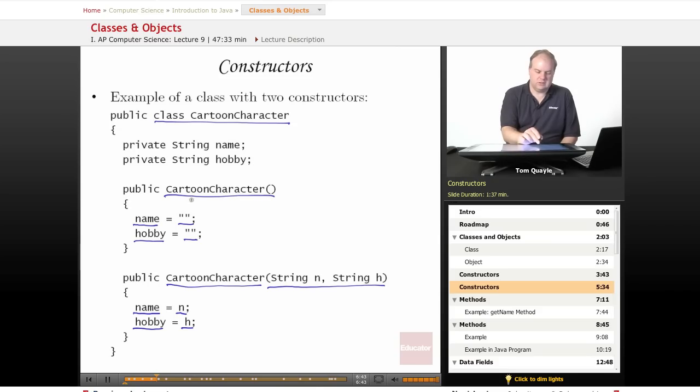And whichever constructor I choose to use depends on what I want to do. If I want to just create an object and have it have the default settings of empty strings for its variables, then I can simply use the no-args constructor here. If I want to specify an initial value of name and hobby, then I would use the constructor that takes parameters for both name and hobby and sets those data variables during the construction process.